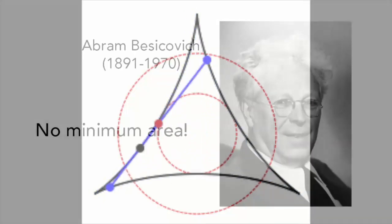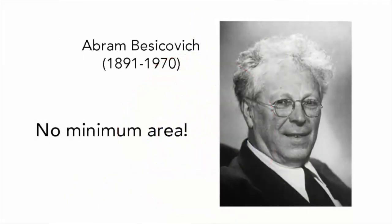But he was wrong. In 1919, the Russian mathematician Abram Besikovich, in searching for a solution to Kakeya's problem that gave an even smaller area, made a startling discovery. There actually is no minimum area.